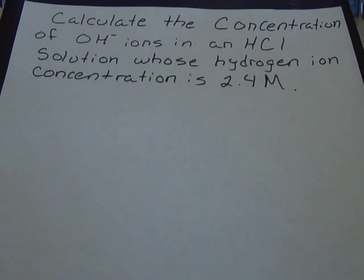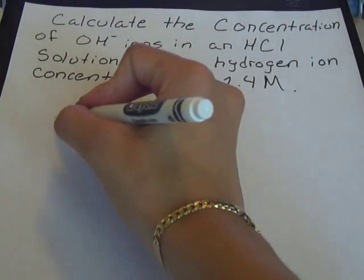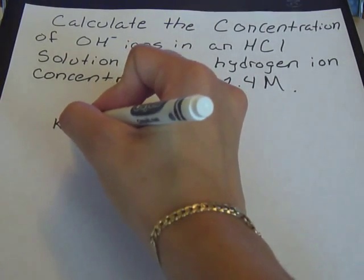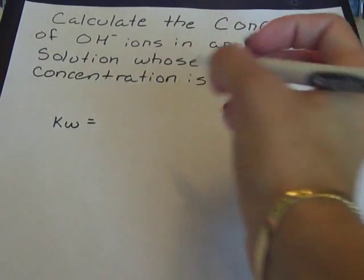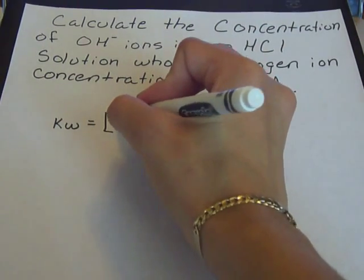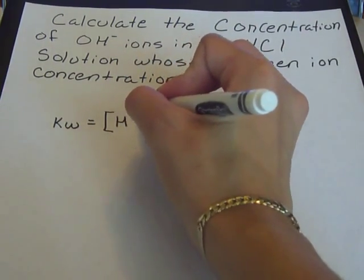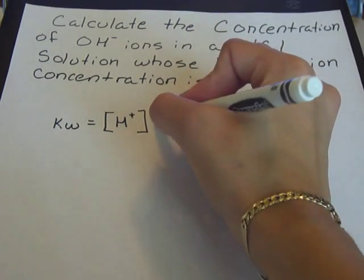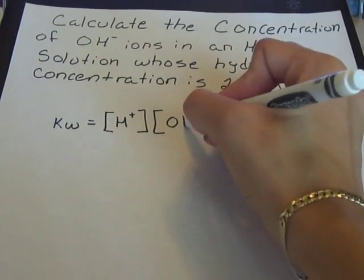The first thing we need to know for this problem is the Kw equation. That is just Kw equals the concentration of the hydrogen ion multiplied by the hydroxide ion.